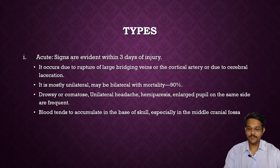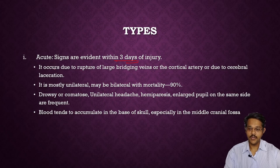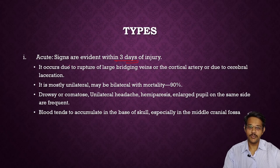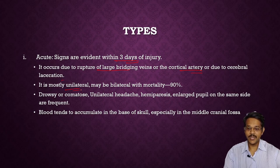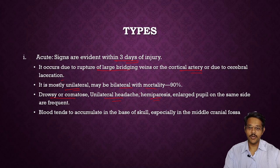Acute subdural hemorrhage: signs are mainly seen within three days of injury. It is due to rupture of large bridging veins, a cortical artery, or cerebral lacerations. It is mostly unilateral, may be bilateral, with mortality of 90% of cases. Clinical features include drowsy or comatose patient, unilateral headache, hemiparesis (half-side body paralysis), dilated pupil on the same side. Blood tends to accumulate at the base of the skull, especially in the middle cranial fossa.